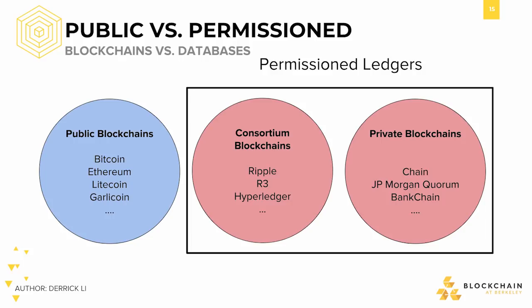However, since public blockchains are open and accessible to everyone by definition, they limit the type of information that can be stored directly on the blockchain. Sensitive and private data — for example, medical records, social security numbers, and private keys — should not be put on a blockchain in plain text. Also, public blockchains inherently function in a trustless environment. Trust is no longer placed in people and organizations, but rather in the math and code behind the system as a whole.